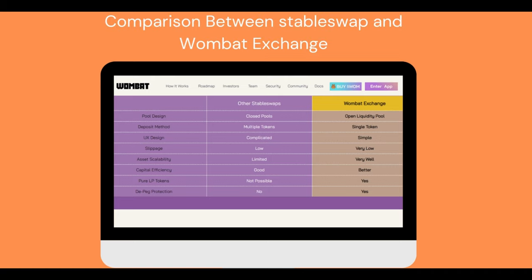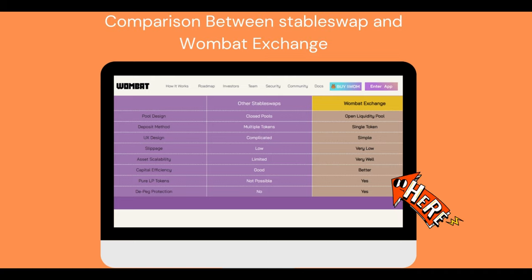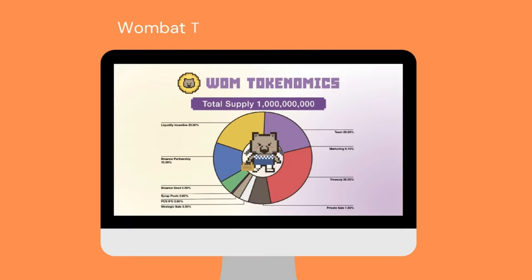For a comparison between Stableswap and Wombat Exchange, you can see the picture on screen. Here is also a chart showing the percentage per category of the total token supply for Wombat Tokenomics and Distribution.